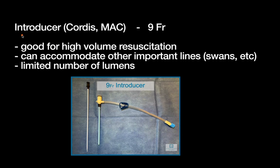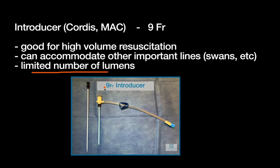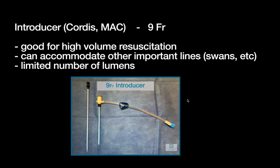Your next option is the introducer sheath — also called a Cordis or MAC. At our institution, this is roughly nine French, and it's also shorter than the other catheters. Wide and short — that's ideal for giving high volumes of fluid over short amounts of time. It's also an introducer, meaning it can be used to introduce other things through its channel, such as Swan-Ganz catheters or transvenous pacers. However, what it has in size, it lacks in number of lumens. If you want to give multiple different medications, you have limited options with just one lumen, unless you modify it by placing something like a slick through the introducer sheath, giving you two lumens.